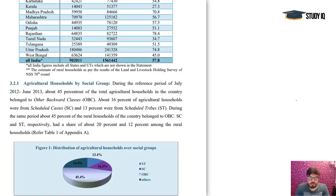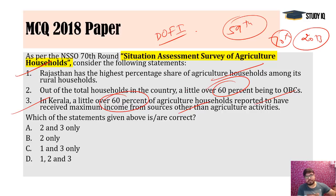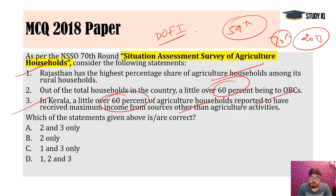This was an important highlight of the report. It also discussed OBC percentage — the same report's Chapter 3 states that 45% of total agricultural households in the country belong to Other Backward Classes, not 60%. These data points are crucial. The issue of data manipulation — new GDP methods, growth numbers, and allegations that true agricultural and employment numbers are not properly disclosed — made this question even more important.